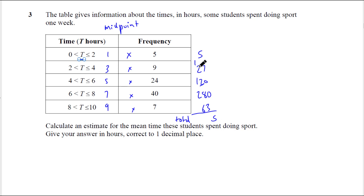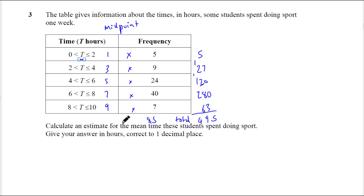Use your calculator. That's 15, add 3, 5, add 8, 13, add 6, 19, and that is 4 — so we've got a total of 495. And what's the total of students? Have they given us the amount? No. So: 5 add 9 is 14, add 24 is 38, add 40 is 78, add 7, that's 85. So that's the total number of students. All we need to do is 495 divided by 85.